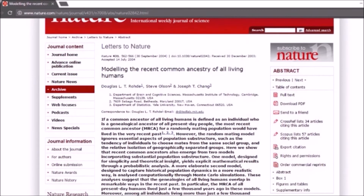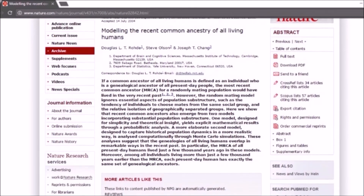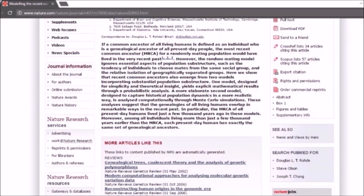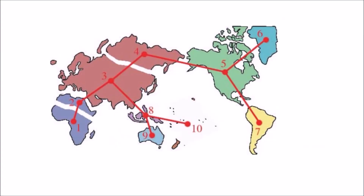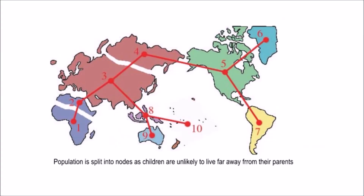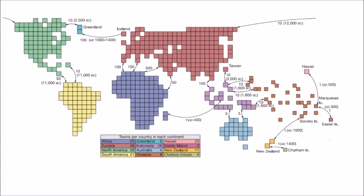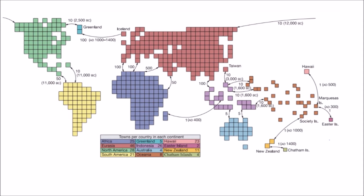In 2004, Douglas L.T. Rohde, Steve Olson, and Joseph T. Chang wrote a paper in the scientific journal Nature, where they used common models to identify the most recent common ancestor of present-day living humans. Their models are centered around local mating, as it is very unlikely that parents would have children far away from where they live, but at the same time their models allowed a small number of random matings. They divided the world into continents, countries, and towns, which are not just geographic positions but can be viewed as abstract pools from which one is more or less likely to choose a mate. These pools can be geographic, religious, or cultural.